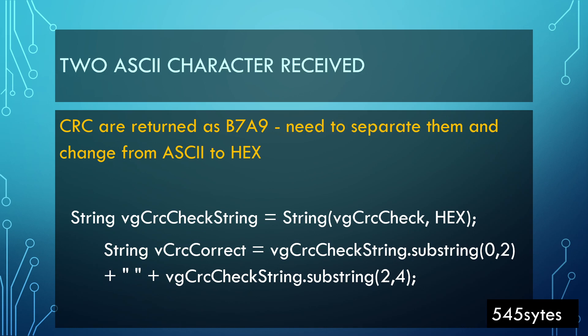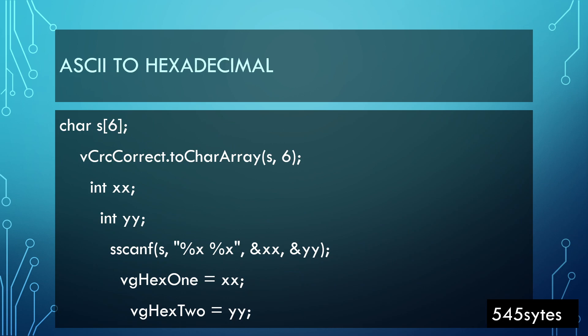We need to convert this into hexadecimal because when we send the request to the inverter, we need to send it in hexadecimal. What I have done is I have used the substring function of C++ which is the Arduino and split B7A9 separately. There is a space added to it. With this command I have separated B7A9 into B7 space A9 and saved this into a string which is crcCheckString.